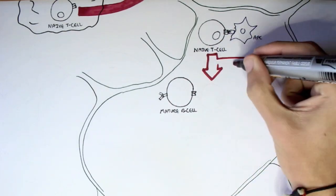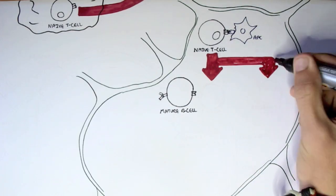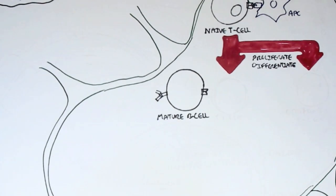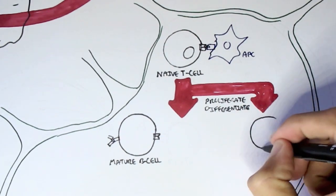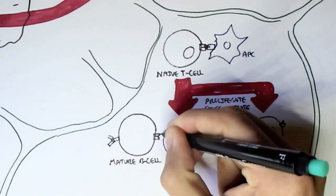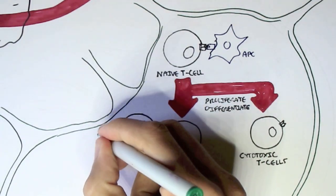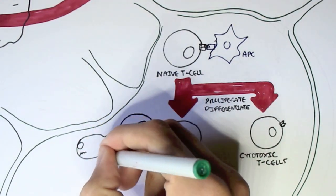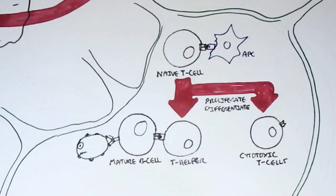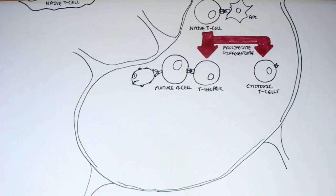The naive T-cell will become activated when an antigen presenting cell — such as a macrophage or dendritic cell — presents an antigen to it. The naive T-cell will then begin to proliferate and differentiate into a cytotoxic T-cell or a T-helper cell. The T-helper cell can then activate the mature B-cell, or alternatively the mature B-cell can become activated when it binds to the antigen of a pathogen, or both.